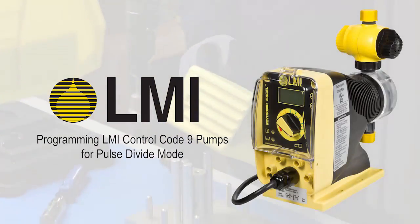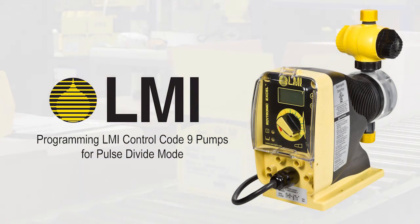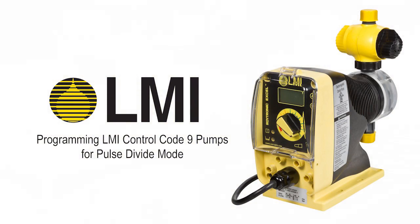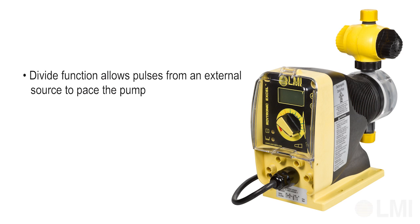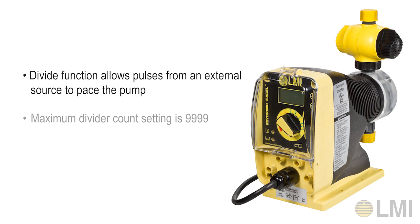Programming LMI Control Code 9 Pumps for Pulse Divide Mode. The Pulse Divide function allows input pulses from an external source to be used to pace your LMI pump. Our example for this exercise will demonstrate Pulse Divide Mode with a divider count of 5. The maximum divider number is 9999.